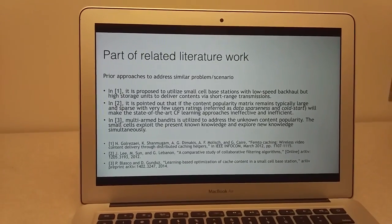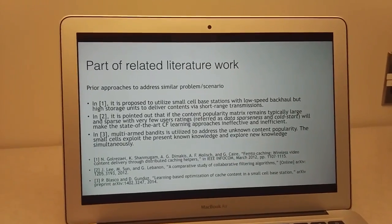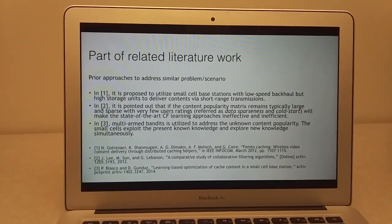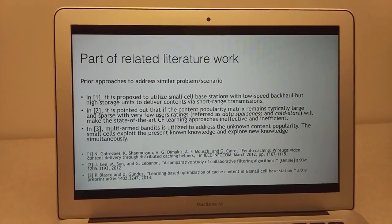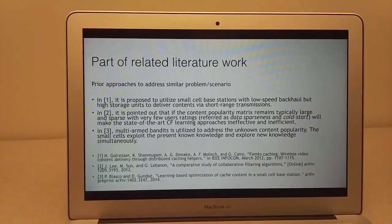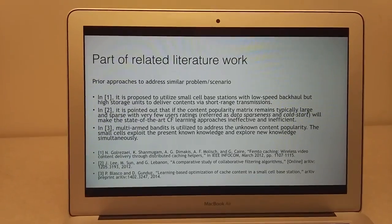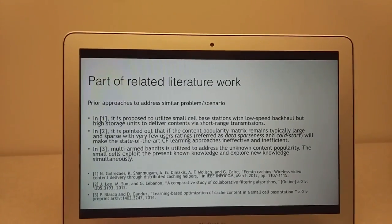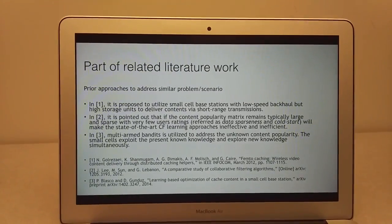This page lists part of the related literature work. The prior approaches address similar problems and scenarios. One paper named Femto-Caching Wireless Video Content Delivery Through Distributed Caching Helpers proposes to utilize small cell base stations with low-speed backup but high-storage units to deliver contents via short-range transmissions. The second paper is A Comparative Study of Collaborative Filtering Algorithms. It points out that if the content popularity matrix remains typically large and sparse with very few users' readings, referred to as data sparseness and cold start, it will make state-of-the-art collaborative filtering learning approaches ineffective and inefficient.